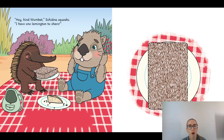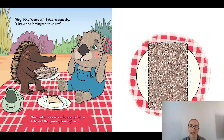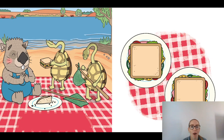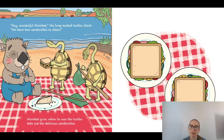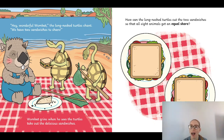'Hey, kind Wombat!' Echidna squeaks. 'I have one lamington to share!' Wombat smiles when he sees Echidna take out the yummy lamington. How can Echidna cut the lamington so that all eight animals get an equal share? 'Hey, wonderful Wombat!' the long-neck turtles chant. 'We have two sandwiches to share!' Wombat grins when he sees the turtles take out the delicious sandwiches. How can the long-neck turtles cut the two sandwiches so that all eight animals get an equal share?